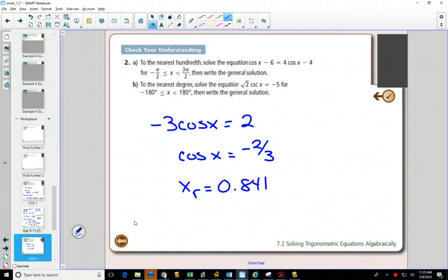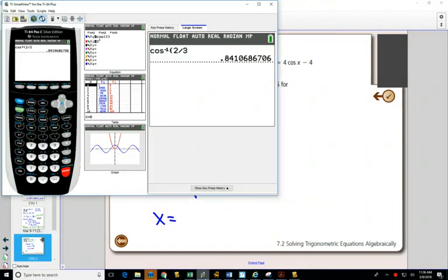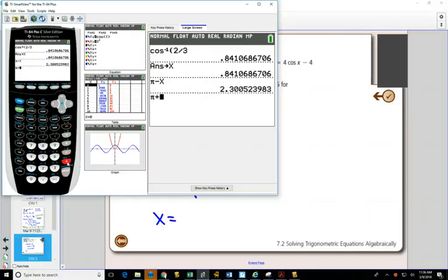If I'm solving this between 0 and 2π, cos is negative, so it would be in quadrants 2 and quadrants 3. So I go to my calculator, maybe I store my reference angle as x, find my answer π minus my reference angle for quadrant 2, π plus my reference angle for quadrant 3, 2.30 and 3.98.